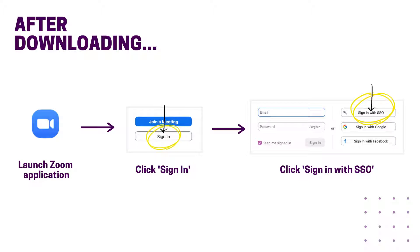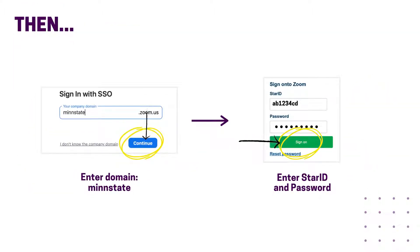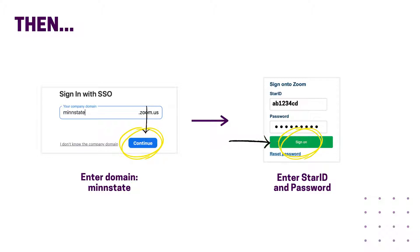Next, choose the option that says sign in with SSO or single sign-on. Then enter the domain name of our secure MinState portal, which is simply just MinState. Then click continue. This will prompt your web browser to open and you'll be asked to sign on. Enter your star ID and star ID password and click sign on.